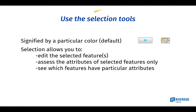Selection tools act like a filter. You can select features on the map using your cursor, or use a query tool to find features with a particular attribute. Selection lets you edit selected features — moving them or changing their shape — and assess the attributes of only the selected features. You can query to see which features have a particular attribute, and then perform all kinds of analysis on those selected features.